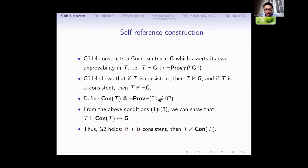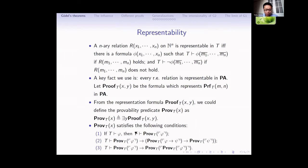This proof sketch is standard in modern textbooks. In fact, it is not the same as Gödel's original proof. For Gödel, he thinks that G2 is just a corollary of G1. The reason is that in G1, he shows that if T is consistent, then the Gödel sentence is not provable. These statements can be formalized over T, so in T we can prove that Con(T) implies the Gödel sentence is not provable. But the Gödel sentence is equivalent to its own unprovability, so we get Con(T) implies G. And since G is not provable in T, we get that the consistency of T is not provable in T. This modern formulation is based on the derivability conditions D1 and D3.